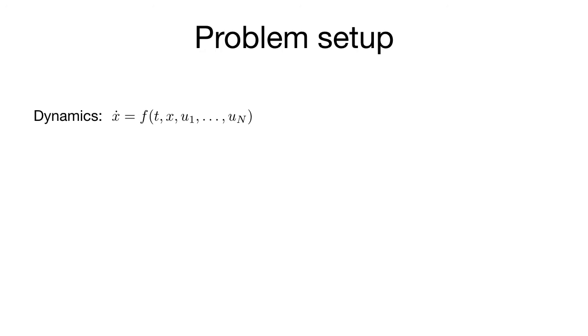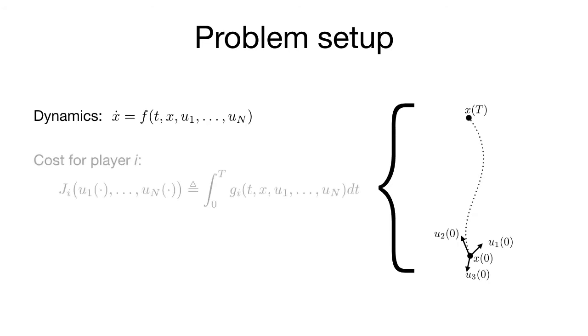Now, from any initial condition x0, if each player applies some input, the trajectory of the system might look something like this. Different players may prefer different trajectories. These preferences are encoded in time-separable cost functions for each player.